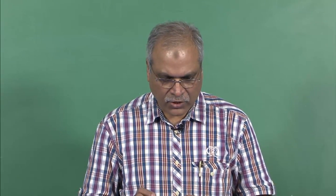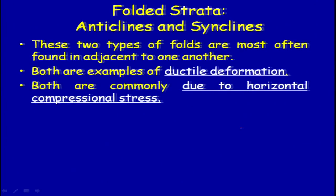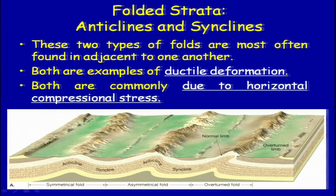If you fold the strata, you will be able to see the up and down stratigraphic location or position of that particular stratum. Both anticlines and synclines are examples of ductile deformation and are commonly due to horizontal compressional stress. Anticlines are marked by hills or hill ranges, and synclines are the intermountain depressions between them. A symmetric anticline is where both limbs are dipping away from one another at the same angle — the amount of dip is very similar.